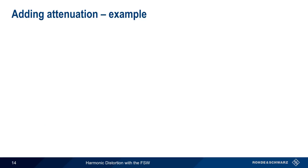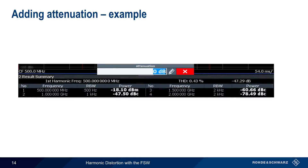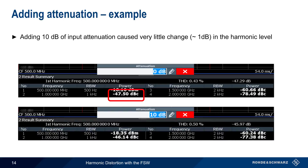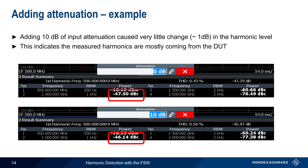Let's look at an example. Here are the levels of the harmonics without additional attenuation. Note, in particular, the level of the second harmonic: minus 47.5 dBc. When 10 dB of attenuation is added, the level of the second harmonic changes by less than 1 dB, to minus 46.14 dBc. So in this case, we can say that the analyzer is adding little to no harmonic distortion to the measured signal.